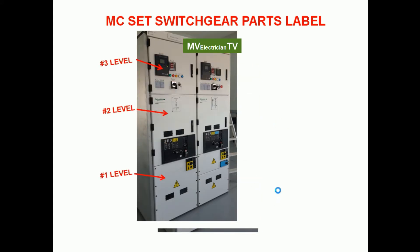This switchgear is separated into three levels. We have the first level for the earth switch and potential transformer, the second level for the IEC circuit breaker, and the third level is the metering level for the cubicle and also the control switch.